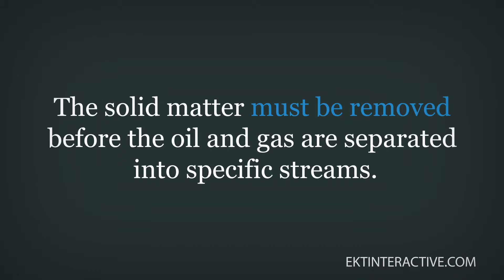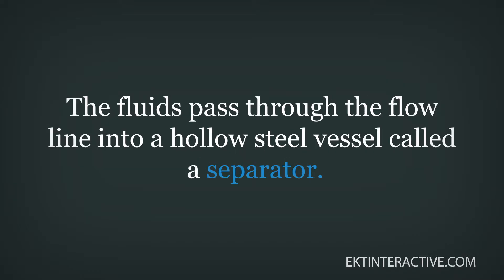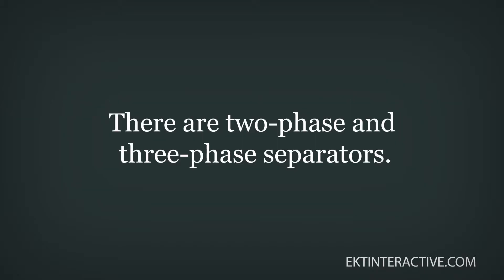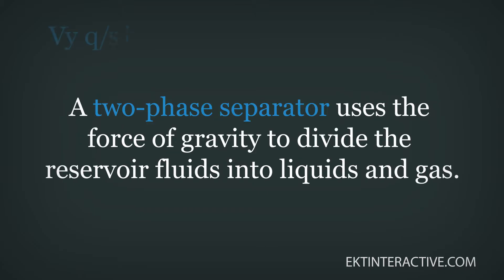Reservoir fluids produced at the wellhead are a complex mixture of liquids, gas, and solids. An oil well often produces small amounts of natural gas along with salt water, and natural gas production often includes salt water and liquid hydrocarbons. The solids produced can include sand, scale, and shale sediments. The solid matter must be removed before the oil and gas are separated into specific streams.